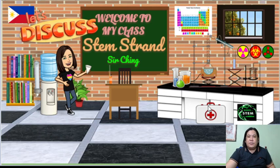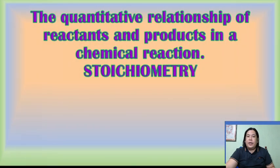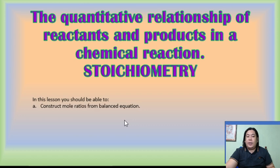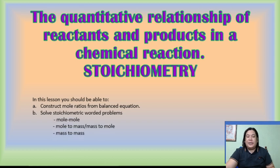Good day, dear STEM students. For today we'll be discussing all about stoichiometry, or the quantitative relationship of reactants and products in a chemical reaction. In this lesson, you should be able to construct mole ratios from a balanced equation and then solve stoichiometric worded problems: mole-to-mole, mass-to-mole or mole-to-mass, and mass-to-mass stoichiometric calculations.